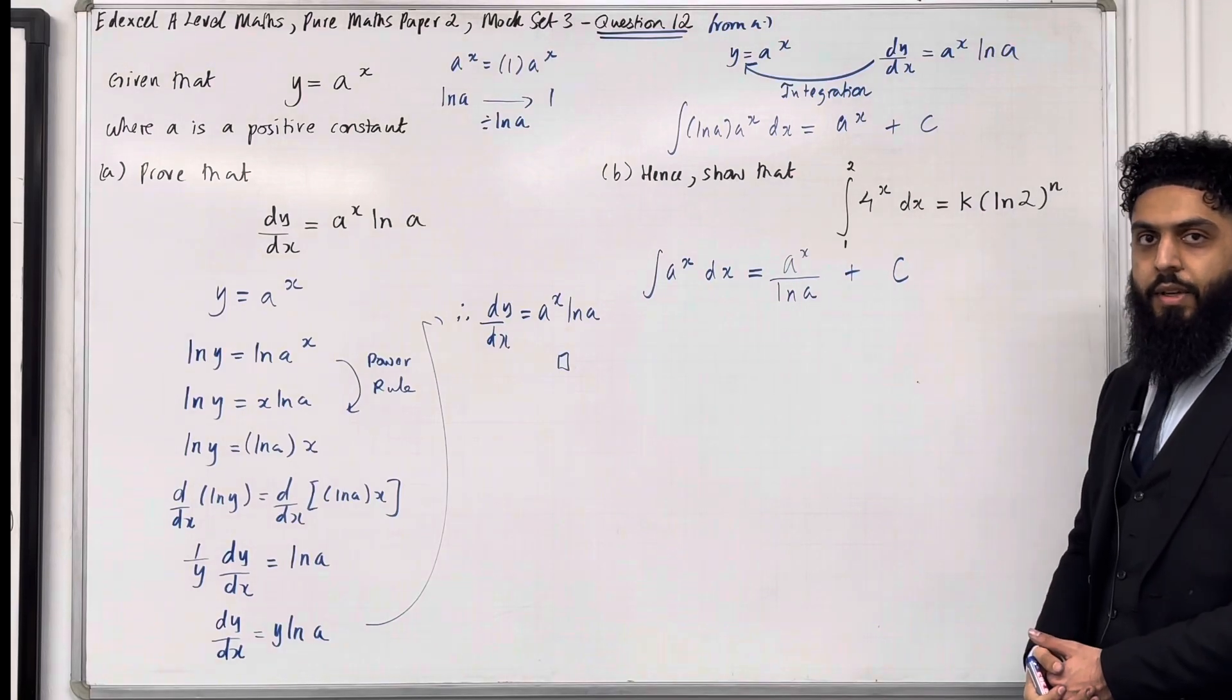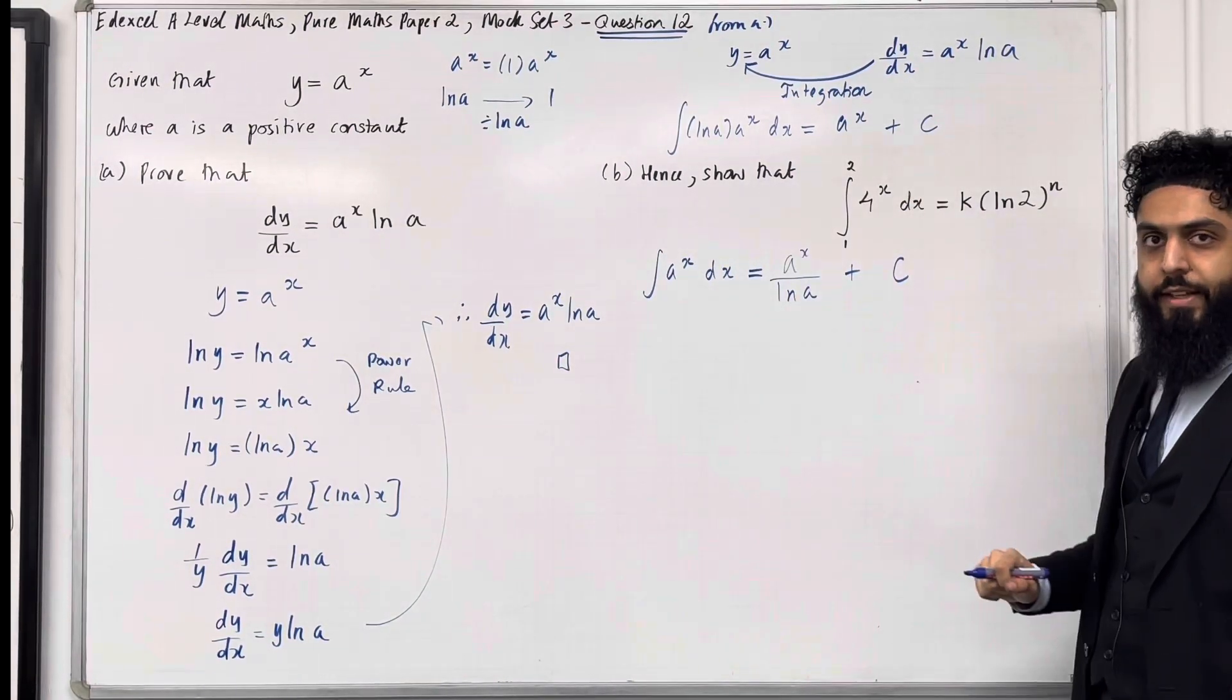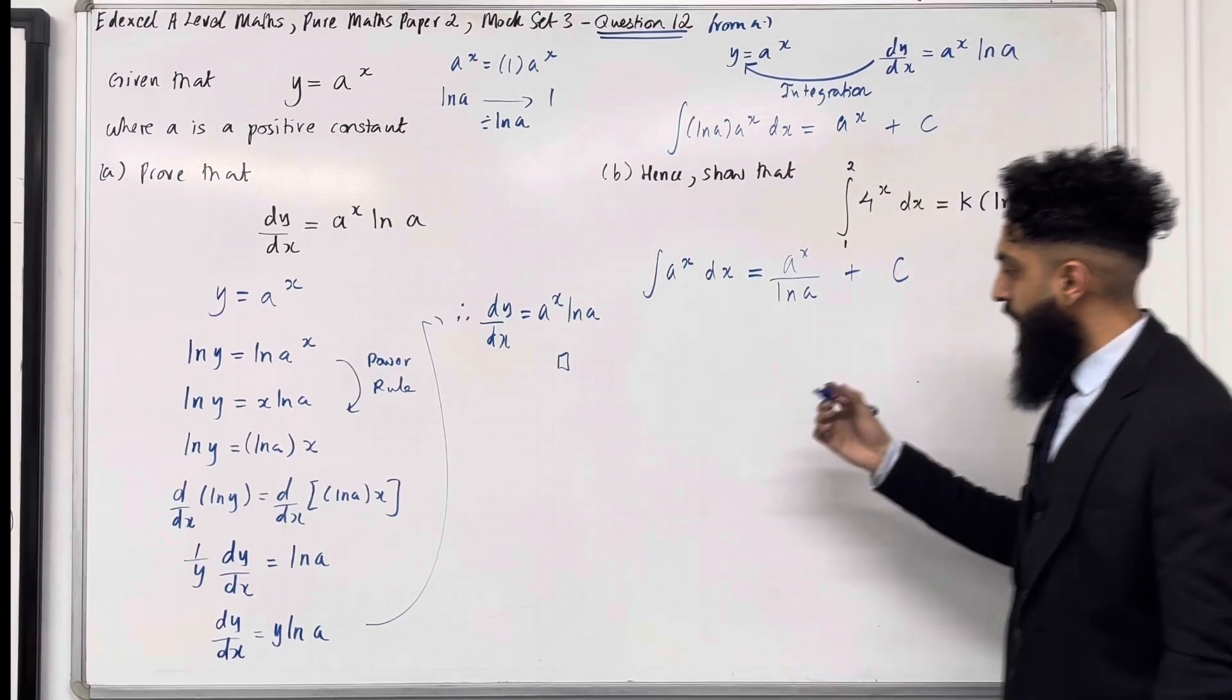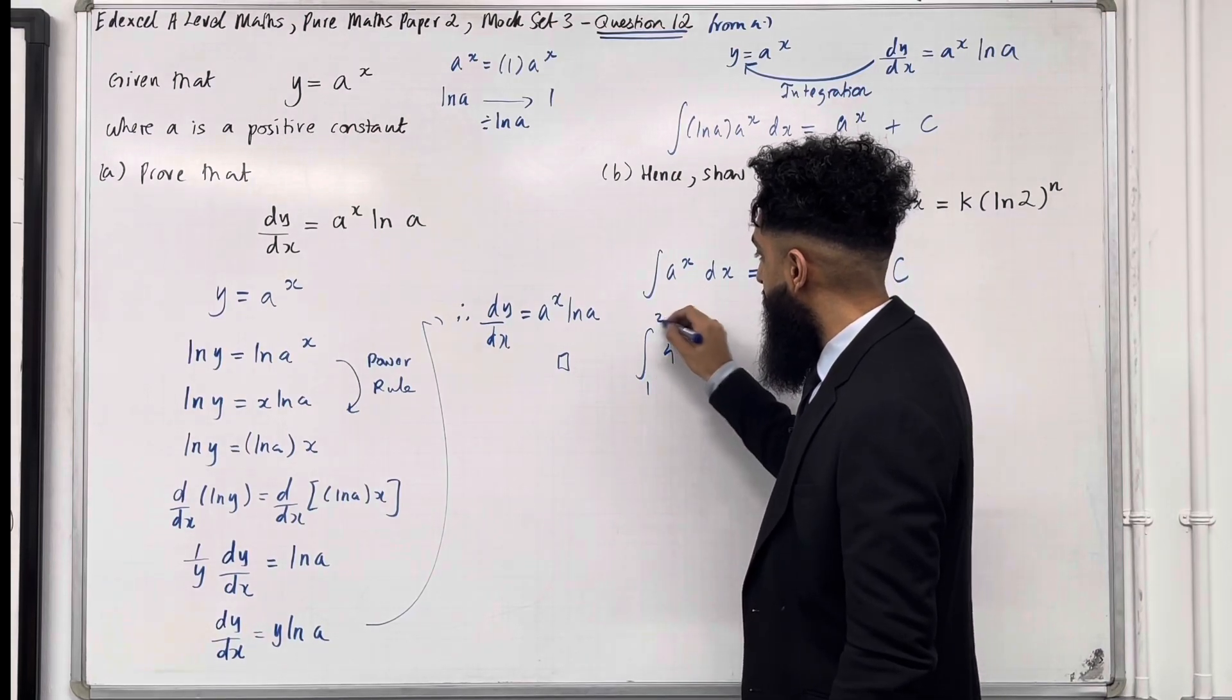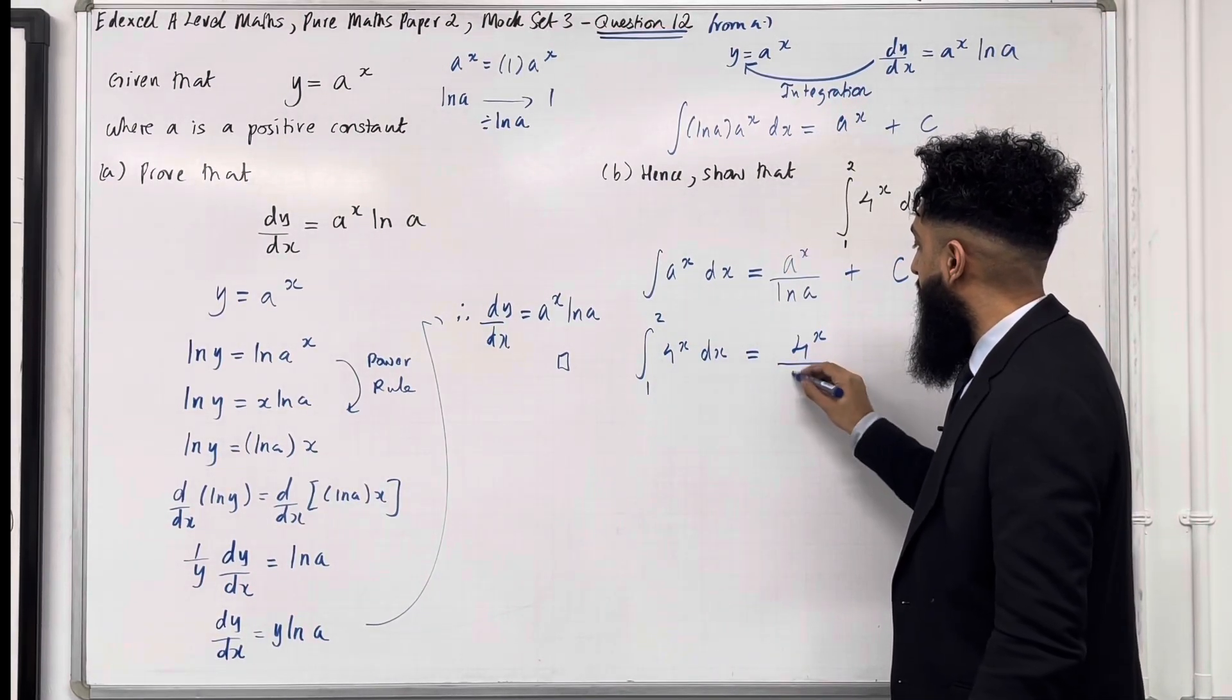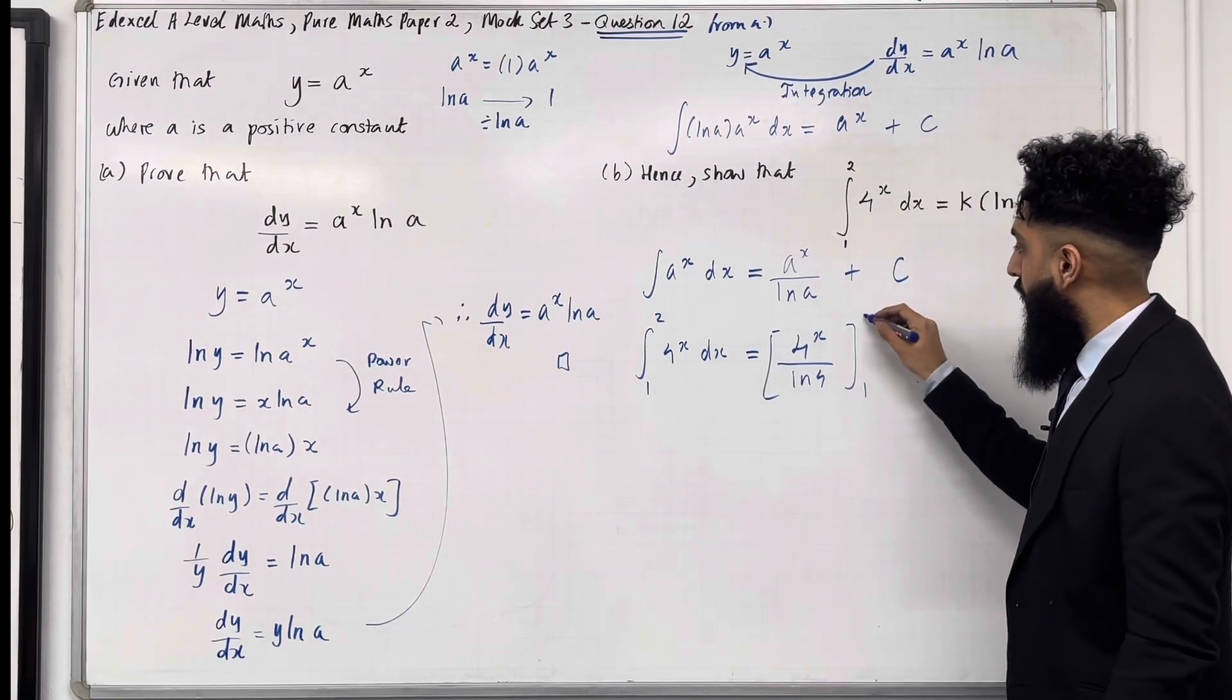Now I can use this rule to integrate 4 to the power x with respect to x, taking the limits 1 to 2. So the integral of 4 to the power x with respect to x from 1 to 2, this is going to be 4 to the power x over ln 4. Square bracket, lower limit 1, upper limit 2.